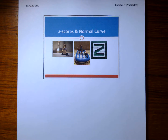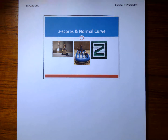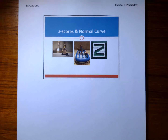Hi, it's Dr. Z. In this video, I will review how the normal curve table can be used to determine the area under the curve for a specific z-score. By the end of this video, you'll be able to find the percentage under the normal curve for two different scenarios.